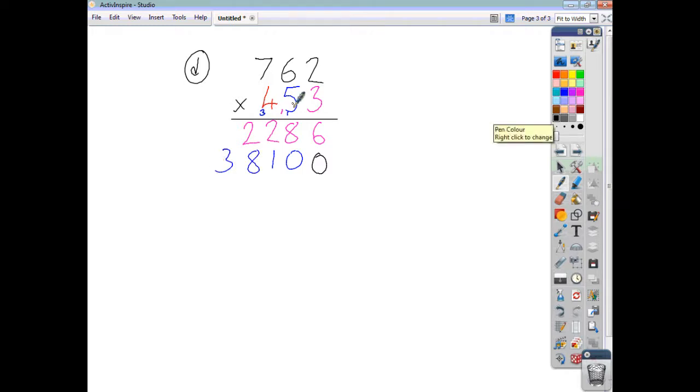Now the 5 represented 5 tens. The 4 represents 4 hundreds. So because we're in the hundreds column, for the next line we add 2 zeros. And again, multiplying everything by 4. 4 twos are 8. 4 sixes, 24. Write the 4, carry the 2. 4 sevens, 28. Add the 2, you get 30.